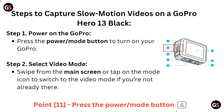Step 1: Power on the GoPro. Press the power or mode button to turn on your GoPro. Step 2: Select video mode. Swipe from the main screen or tap on the mode icon to switch to video mode if you are not already there. Point 11 in the shown figure is the power or mode button.